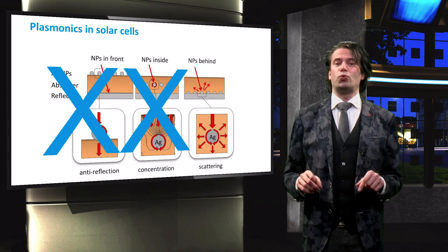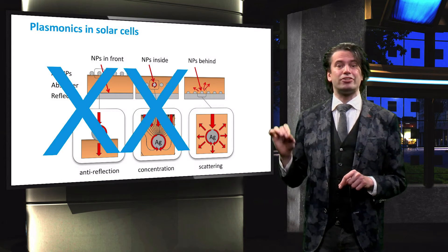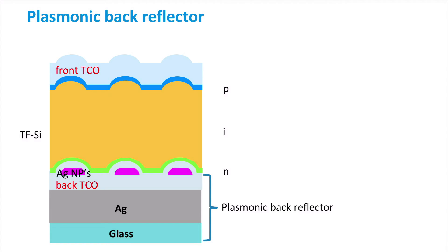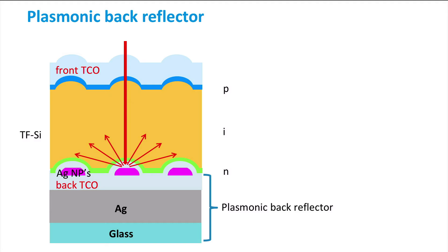This leaves us with the plasmonic nanoparticles as a back reflector. Silver nanoparticles behind the absorber layer is the most promising approach. A conventional metallic back reflector would simply reflect light without any scattering, whereas a plasmonic back reflector can scatter the light into large angles, thereby increasing the optical path length of the light through the absorber layer. Furthermore, the geometry of the silver nanoparticles can be tuned to target, for instance, red light, which has a lower absorption probability.